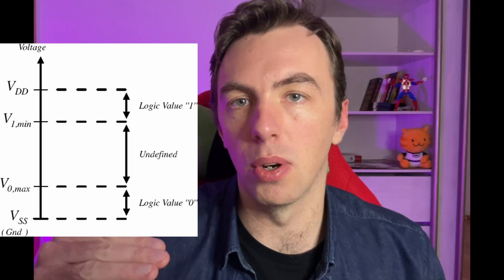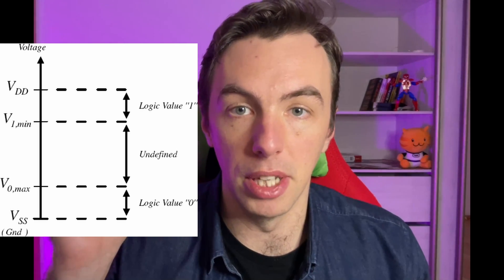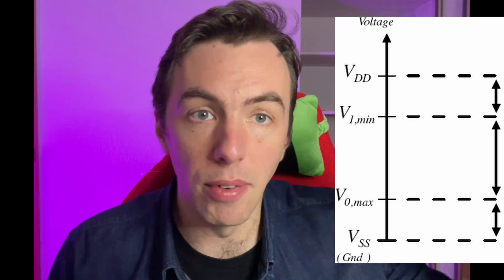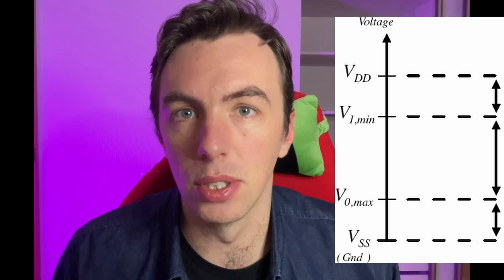Humans can interact and communicate numbers in natural language — we just say a number like 13 or 17:30 o'clock. However, computers are not able to do so. What they operate with are voltages. When you have a voltage of one or less, it means zero, and when you have a voltage of five, it means one. So basically computers only operate with zeros and ones.